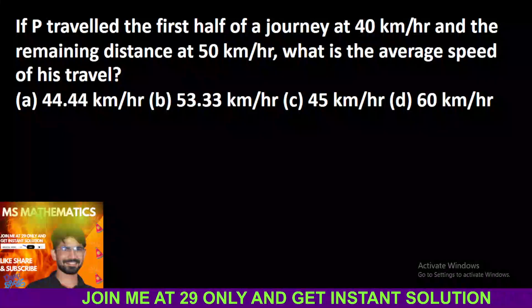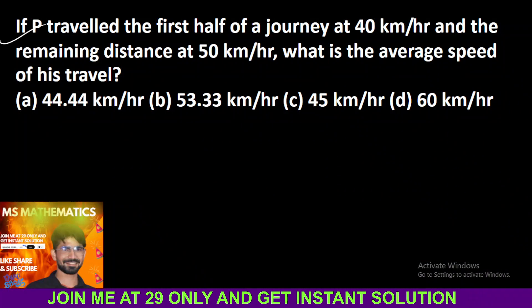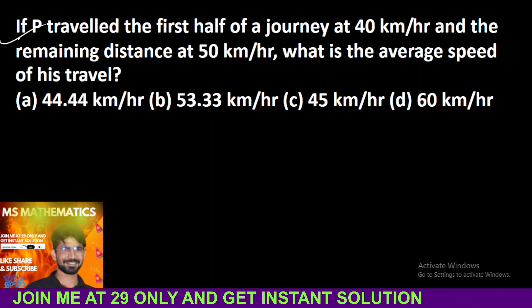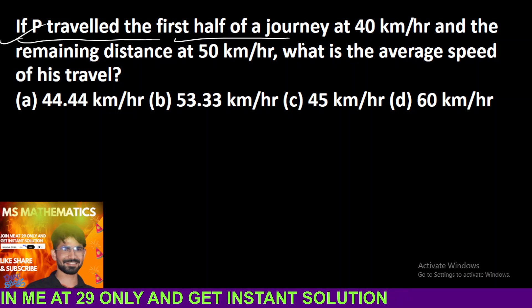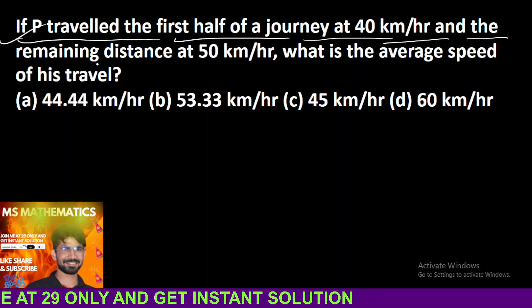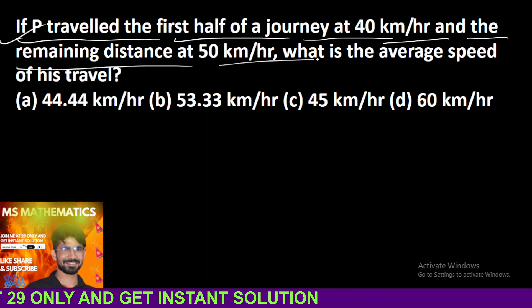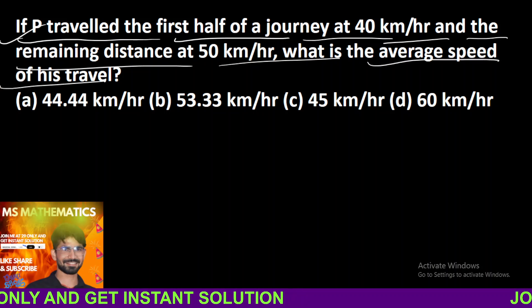Hello friends, how can we solve this question? It's a big question, it's a good question. If we travel the first half of a journey at 40 km per hour and the remaining distance at 50 km per hour, what is the average speed of travel?